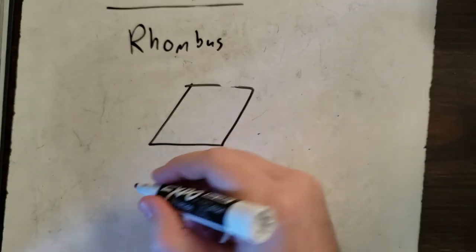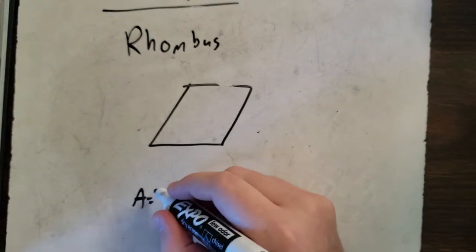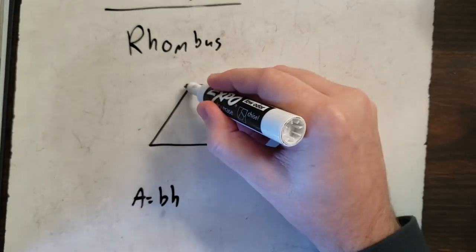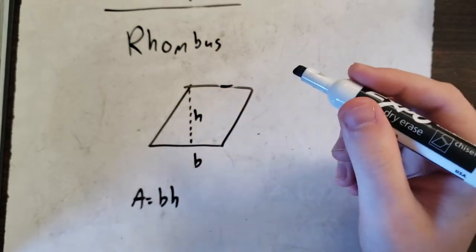Now for area, area is the same formula as it is for a parallelogram, where it's base times height. So we'll do the same thing. They're going to give you a height and a base.